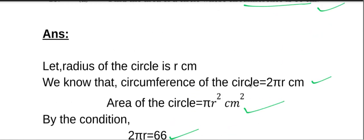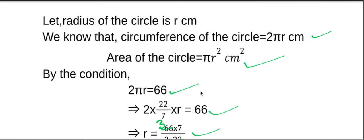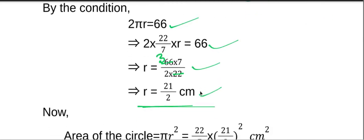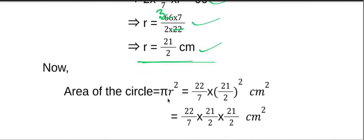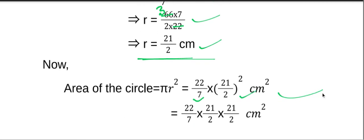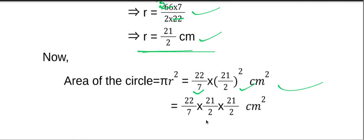Now, the question asks to find the area of the circle. Area = πr². Substituting π = 22/7 and r = 21/2, we get: (22/7) × (21/2)² centimeters square, which simplifies to 22/7 × 21/2 × 21/2 centimeters square.